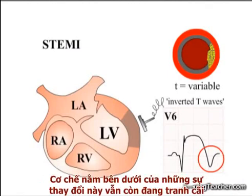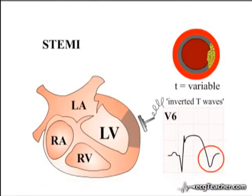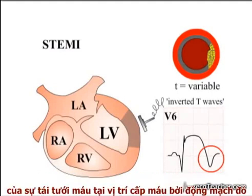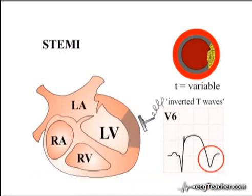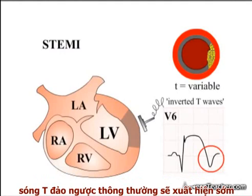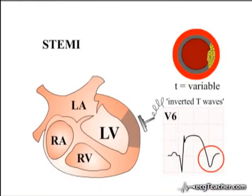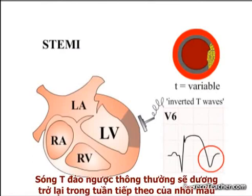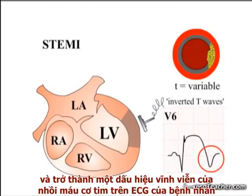The mechanism underlying T wave inversion is controversial. The process of clot formation in acute MI is dynamic, and there is some evidence that T wave inversion may actually reflect re-perfusion of the area supplied by the vessel, as it re-cannulates either spontaneously or in response to treatment. In support of this view, flipped T waves are commonly seen to develop shortly after thrombolytic therapy is initiated for STEMI. Flipped T waves generally return to the upright configuration in the week following infarction, but occasionally can persist as a permanent marker of the infarct on the patient's ECG.